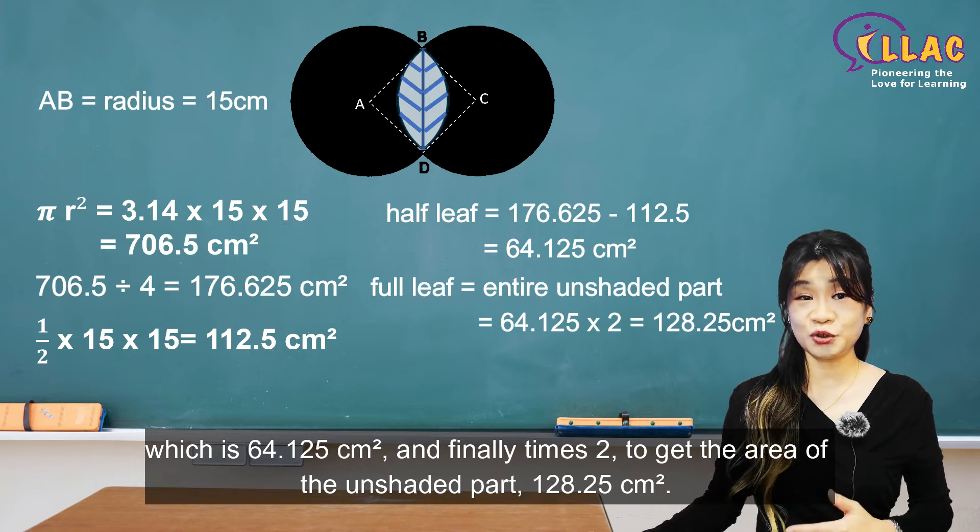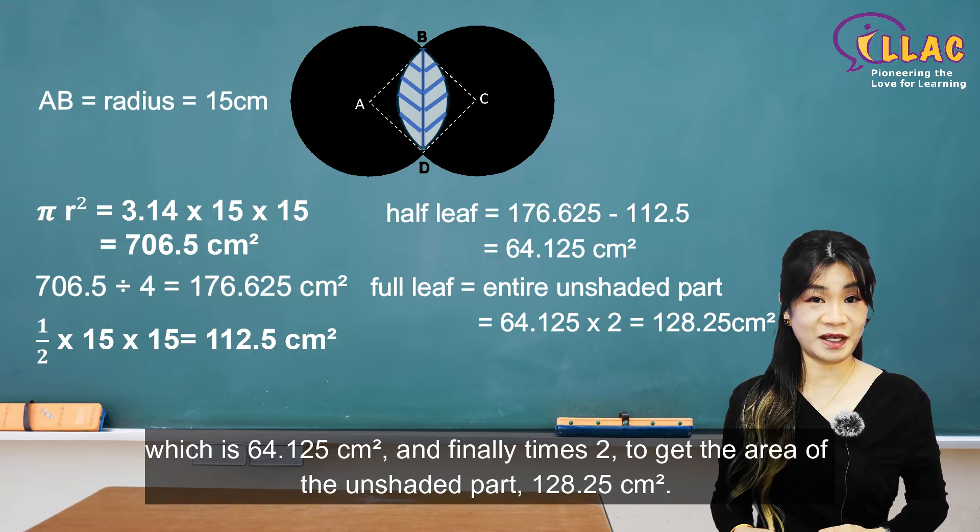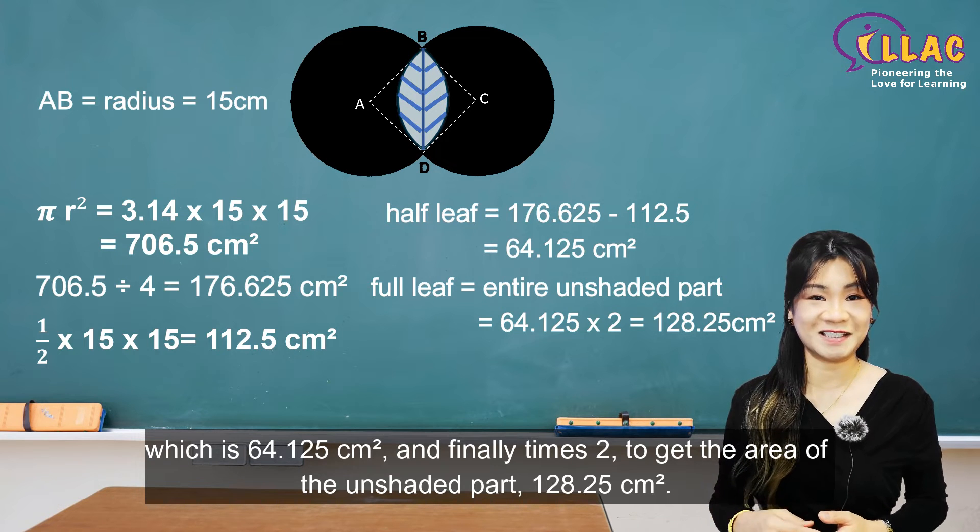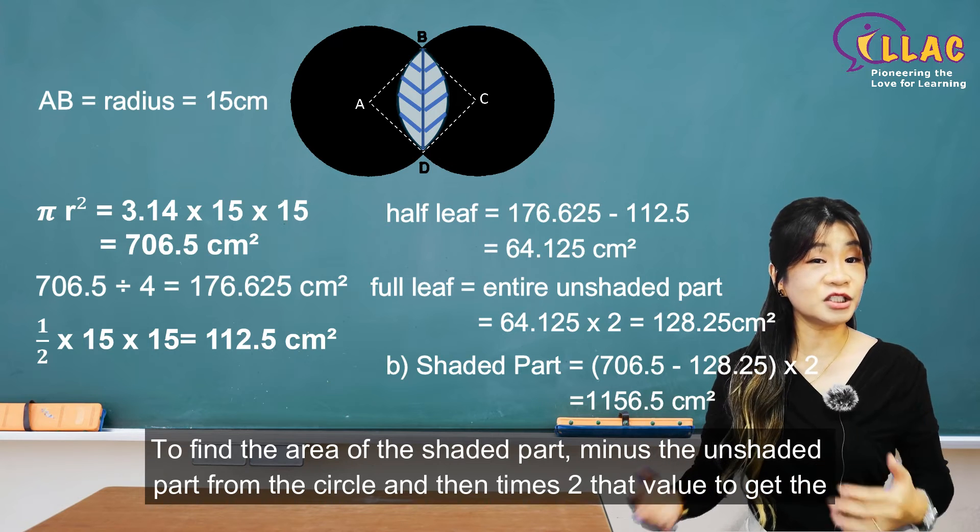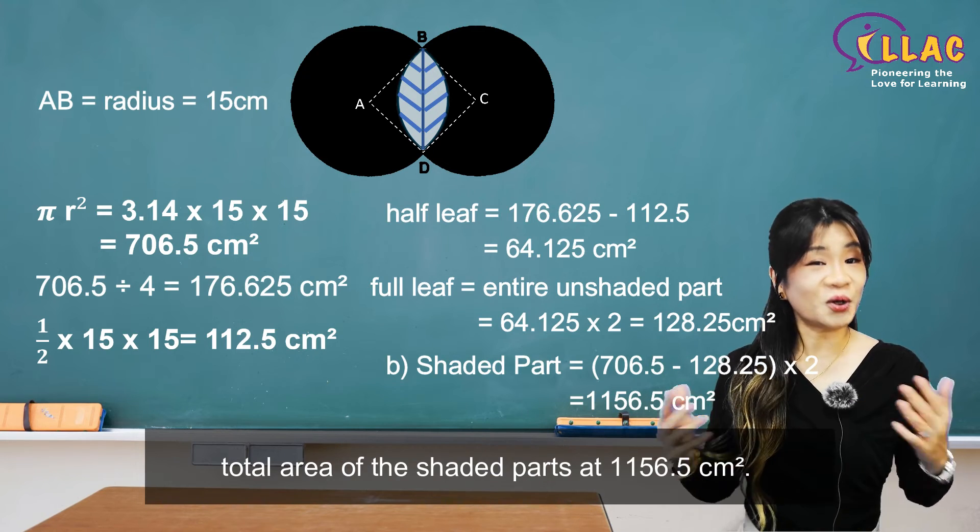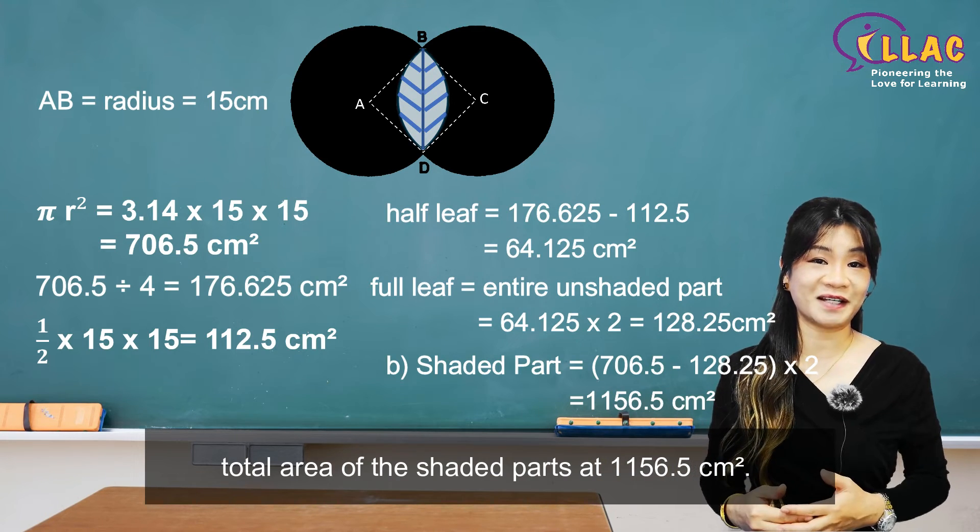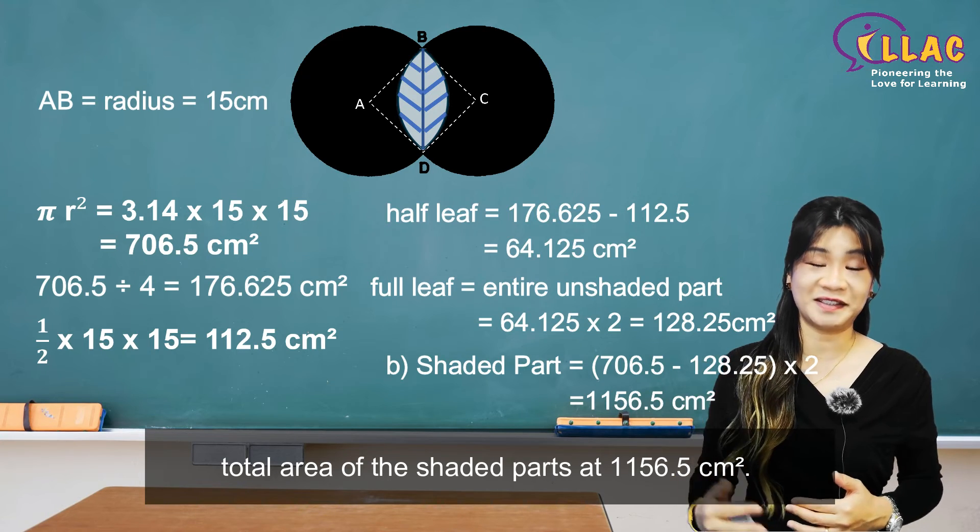And finally, times 2 to get the area of the unshaded part, 128.25 square centimeters. To find the area of the shaded part, minus the unshaded part from the circle and then times 2 that value to get the total area of the shaded part at 1156.5 square centimeters.